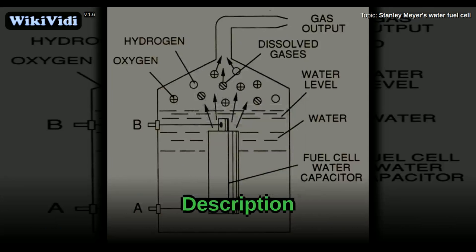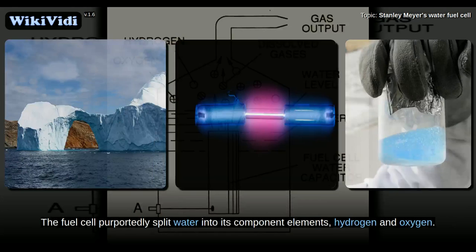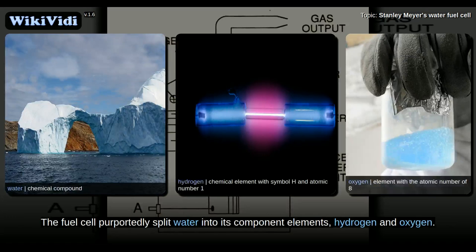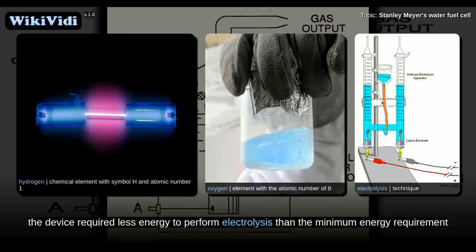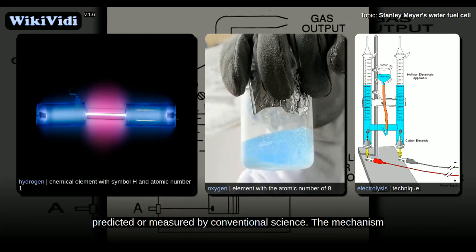Description. The fuel cell purportedly split water into its component elements, hydrogen and oxygen. The hydrogen gas was then burned to generate energy, a process that reconstituted the water molecules. According to Meyer, the device required less energy to perform electrolysis than the minimum energy requirement predicted and measured by conventional science.